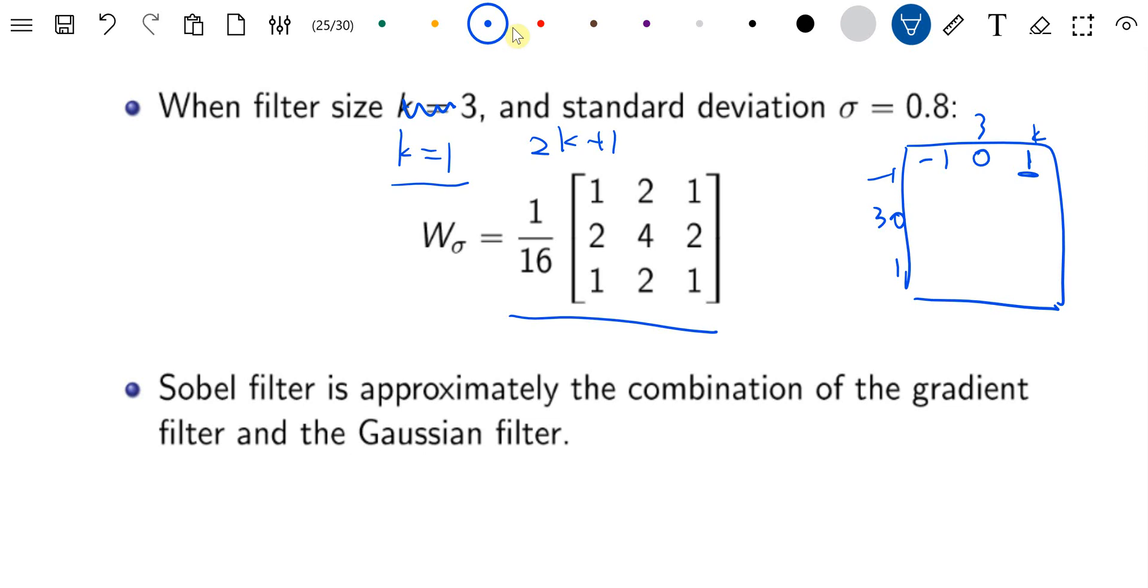That number is k. So usually if you have a kernel, it's minus k until 0 and k, so in total there are 2k plus 1 entries. It's a 2k plus 1 by 2k plus 1 matrix, and that's the filter size.